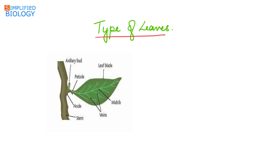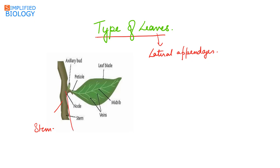Leaves are lateral appendages or outgrowths of a plant growing on the stem. A leaf consists of three parts: leaf base, petiole, and leaf blade or the lamina.